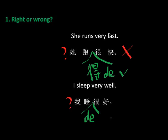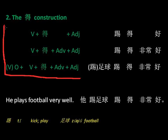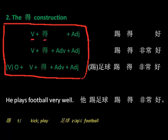那为什么我们有这个 得 呢？好，今天我们来学习这个 the construction。我们来先看一下它的 construction 是什么。就是这个部分：第一个就是一个动词加上一个 得，加上一个形容词。